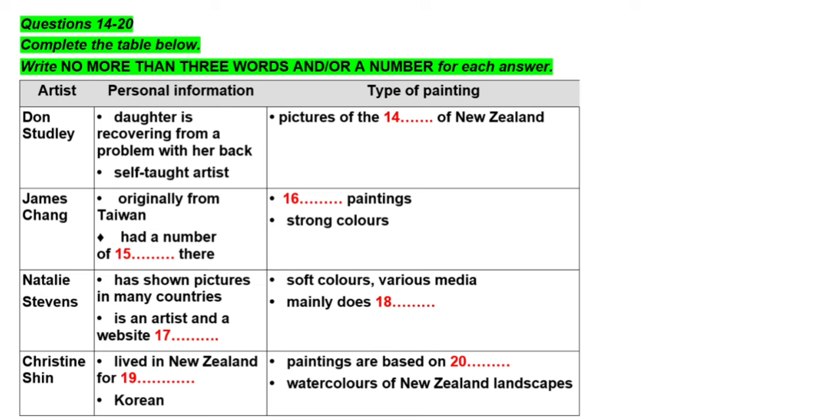And then we have Christine Shin from Korea. Christine only started to learn English two years ago when she arrived in New Zealand but she's been painting professionally for over ten years and she sure knows how to communicate strong messages through the universal language of art. She usually works from photographs and paints delicate watercolors which combine traditional Asian influences with New Zealand landscapes giving a very special view of our local scenery. Well that's all I have time to tell you now but as well as these four there are many other artists whose work will be on sale so do come along on Thursday. We accept checks, credit cards or cash and remember even if you don't buy a picture you can always make a donation.